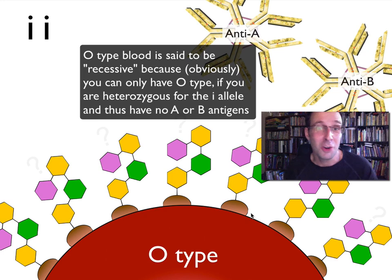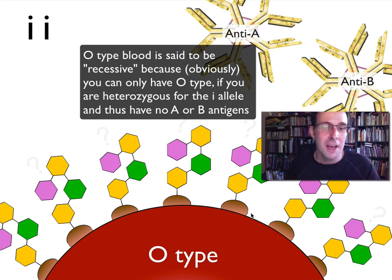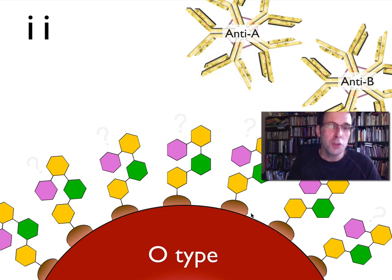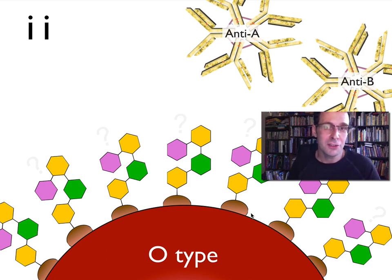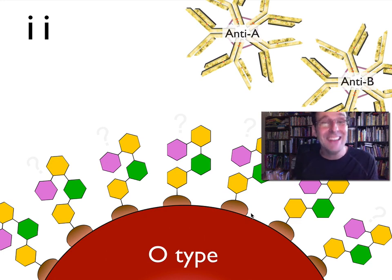I don't know why we don't call it H-type blood — that would make sense since their antigens are all H-antigens. But we call it O-type blood. Of course, because they don't have A or B-antigens on the surface of their red blood cells, their B-cells will produce both anti-A and anti-B antibodies.